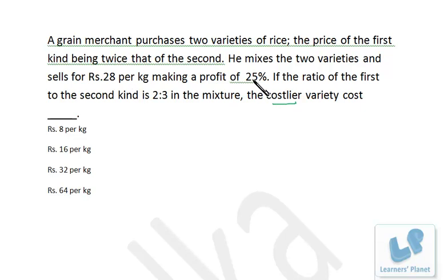That means what is the cost price of the mixture? 28 is the selling price. CP, this is actually 5 by 4. That means CP is actually what? Cost price of the mixture is 4 by 5 of 28, that's 22.4 rupees per kilogram. So that is the cost price of mixture.